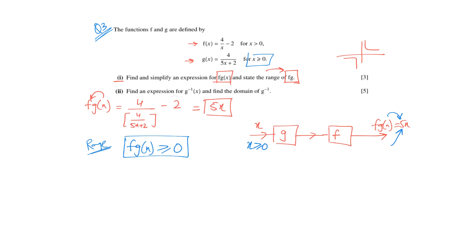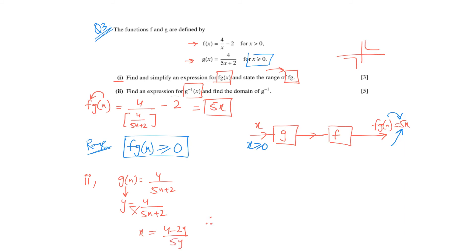In the next part, find the expression for g inverse. g(x) is given as 4 over (5x plus 2). To find g inverse, substitute g(x) with y and make x the subject by cross-multiplying. You get x equals (4 minus 2y) over 5y. Therefore g inverse is (4 minus 2x) over 5x.